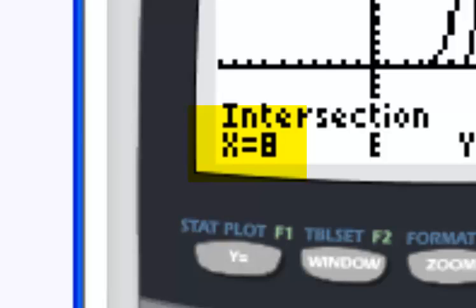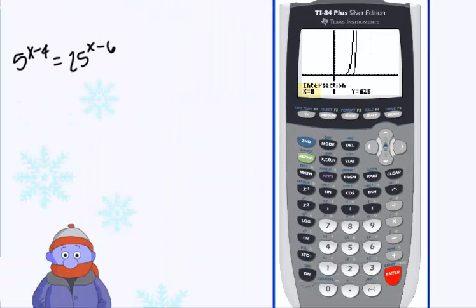We're interested in the x-coordinate because our question asks us to find where 5 to the x minus 4 is equal to 25 to the x minus 6. Okay, so we're interested in that x-value. So for this particular guy, our point of intersection is going to occur when x equals 8.